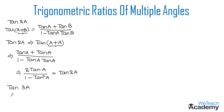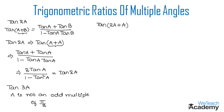Now let us derive the formula for tan 3a, assuming 3a is not an odd multiple of π/2. We write tan 3a as tan(2a + a), which is again in the form of tan(a + b) with a replaced by 2a and b replaced by a. So we get: (tan 2a + tan a) / (1 - tan 2a · tan a).